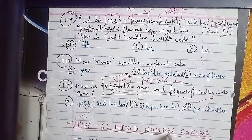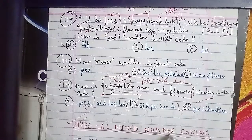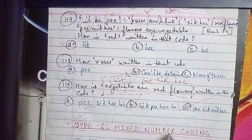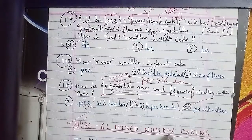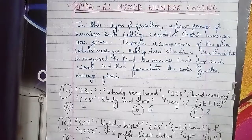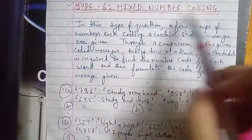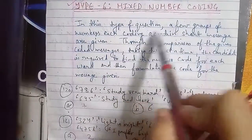So here you can see that for Type 6, mixed number coding, in this type of question, a few groups of numbers with each coding of a certain short message are given. Through a comparison of the given coded messages, taking two at a time...